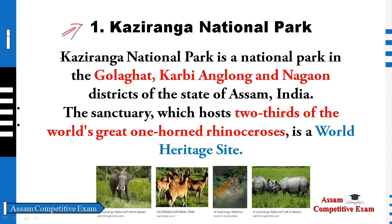First of all, we will discuss the topic about the National Parks. What we know about the National Parks is there are a lot of places located in Assam — in Golaghat, Karbi Anglong, Nagaon, and other places. There are many places located in this region.